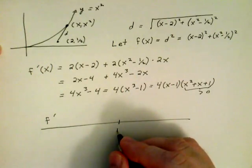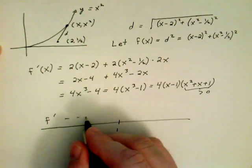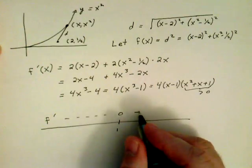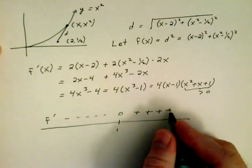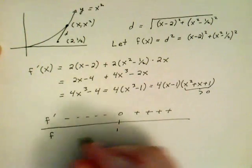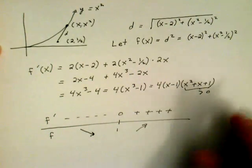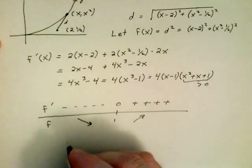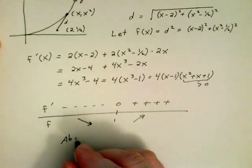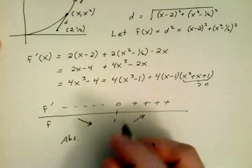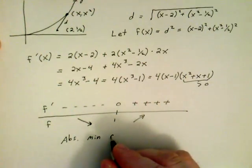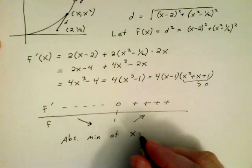Now I can go ahead and use the first derivative test to figure out what's going on with f. So, now I'm going to have negative all the way on the left of 1, and positive always on the right of 1, and the function's decreasing, and then always increasing. Therefore, by the first derivative test, we see that we have an absolute minimum at the point x equals 1.